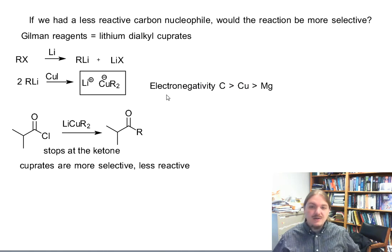I wanted to go up here and make this note about electronegativity. Carbon is more electronegative than copper, which is more electronegative than magnesium. So the carbon copper bond is a little bit more covalent than the carbon magnesium bond, which is why the cuprate reagents and other organo copper reagents are not as strongly basic and they're more selective nucleophiles than the Grignard reagents.